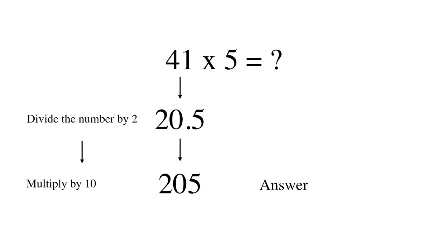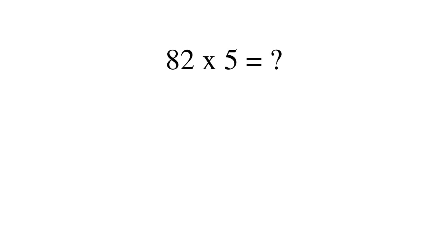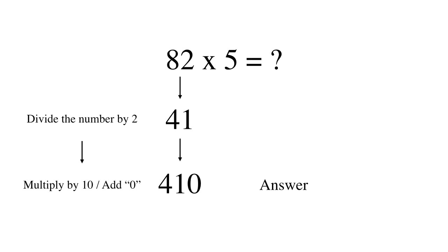One more example: 82 times 5. 82 divided by 2 is 41. 41 multiplied by 10 is 410. So we get the answer: 410.